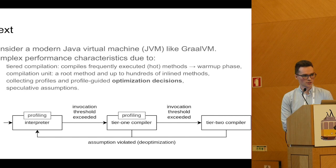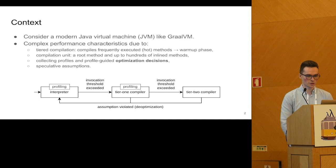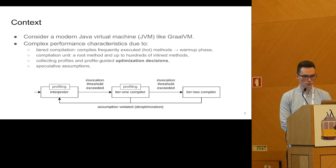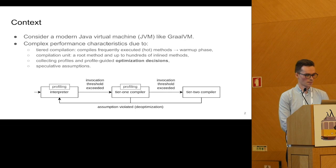Consider the performance characteristics of an application running on the JVM. It's rather complicated, and this is due to several factors. We usually start executing a method in the interpreter. The interpreter collects profiles. When the method is invoked many times, it gets compiled by a tier one compiler that also produces instrumented code that collects profiles. And when the method is invoked even more times, it gets compiled by the tier two compiler that uses the profiles to make optimization decisions, which leads to faster code, usually.